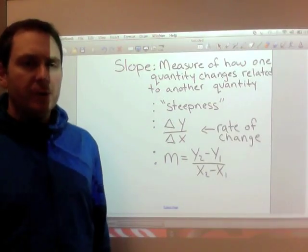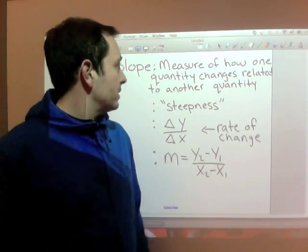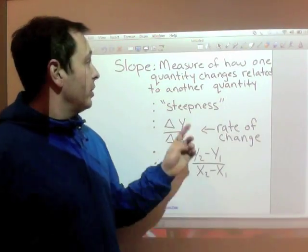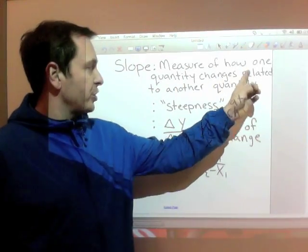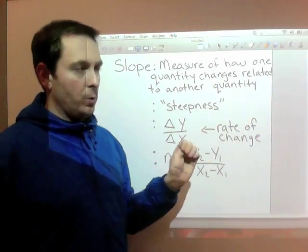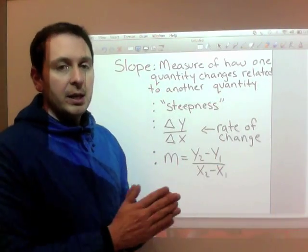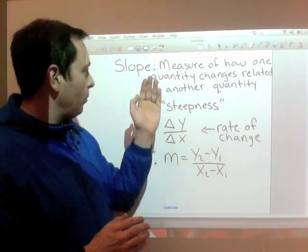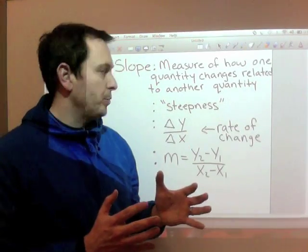Our first learning intention is to define slope. Slope is a measure of how one quantity changes related to another quantity. So maybe as time goes on, time is changing, and maybe the height of something changes. With slope, we're specifically relating to straight lines or linear equations.